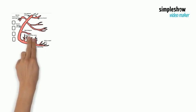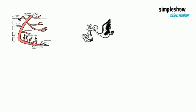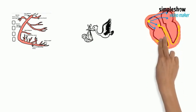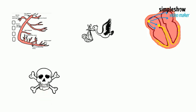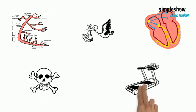Coronary abnormalities are among the most common congenital cardiac anomalies. Anomalous origin of a coronary artery is associated with ischemia, ventricular arrhythmias, and sudden cardiac death, especially with exercise.